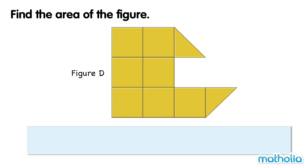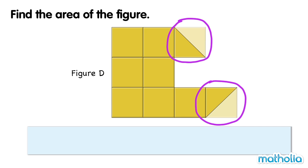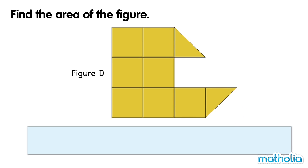Figure D is made of square tiles and triangle tiles. We can see from the triangle tiles that they are equal to half of a square tile. Figure D is made of one, two, three, four, five, six, seven square tiles and two triangle tiles.